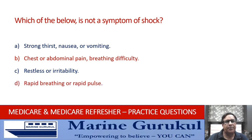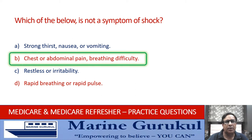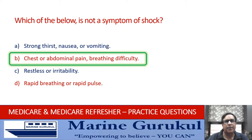Which of the below is not a symptom of shock? The answer that is NOT a symptom of shock is B — chest or abdominal pain or breathing difficulty. Strong thirst, nausea, vomiting, restlessness, irritability, rapid breathing, and rapid pulse rate are all symptoms of shock.